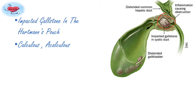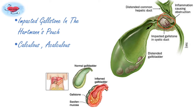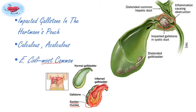In this picture you can see the impacted gallstone at the level of the cystic duct, causing obstruction in the gallbladder. Because of this gallstone obstruction, inflammation occurs over the mucosal wall. You can see the inflamed gallbladder and swollen mucosa. The stone irritates the mucosa and leads to these complaints.